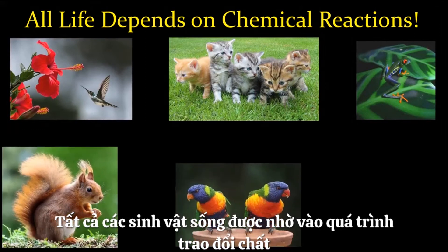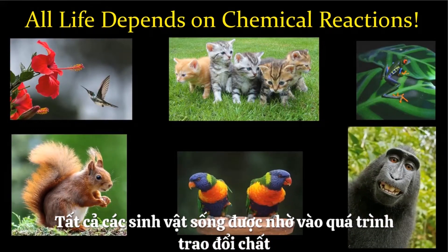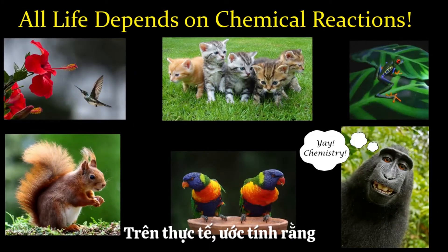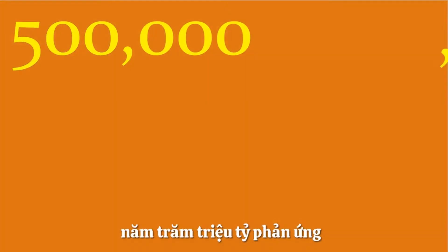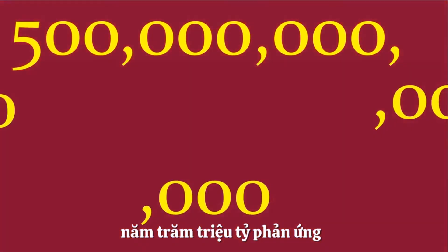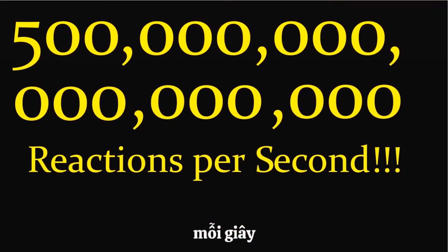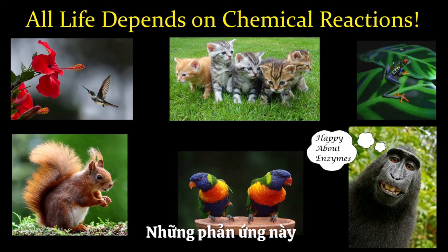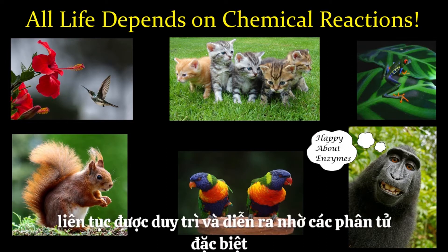All living things are kept alive by doing chemical reactions. In fact, some estimate that your body performs around 500 quadrillion reactions per second — that's a lot. These reactions keep you alive and are done by special molecules called enzymes.